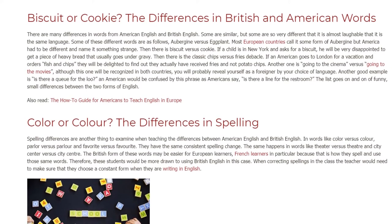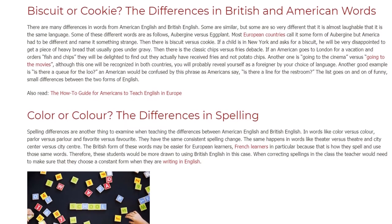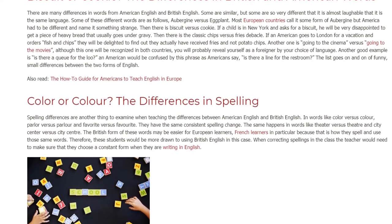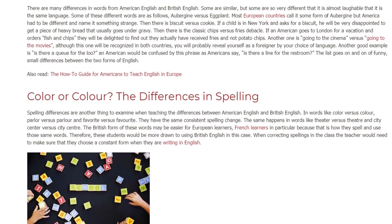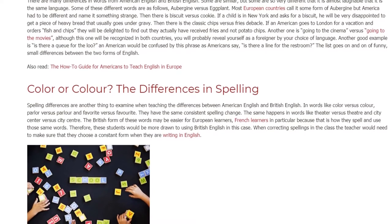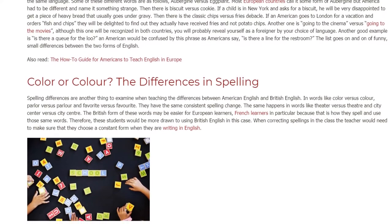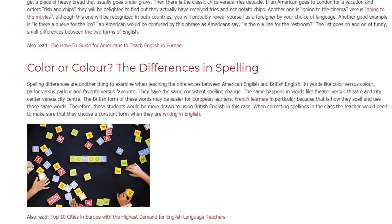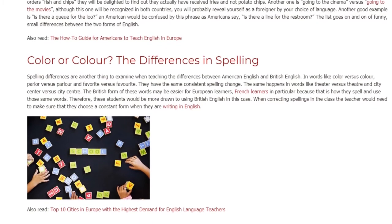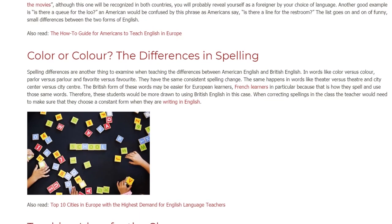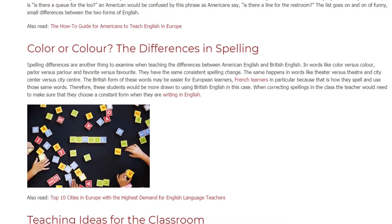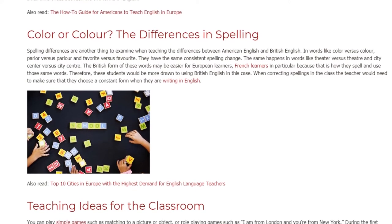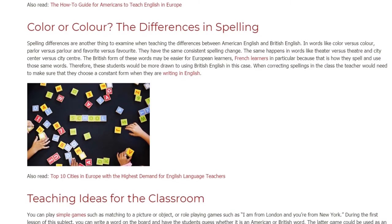Spelling differences are another thing to examine when teaching the differences between American English and British English. In words like colour vs. color, parlour vs. parlor, and favourite vs. favorite, there is a consistent spelling change. The same happens in words like theatre vs. theater and city centre vs. city center. The British form of these words may be easier for European learners — French learners in particular — because that is how they spell and use those same words, making them more drawn to British English.